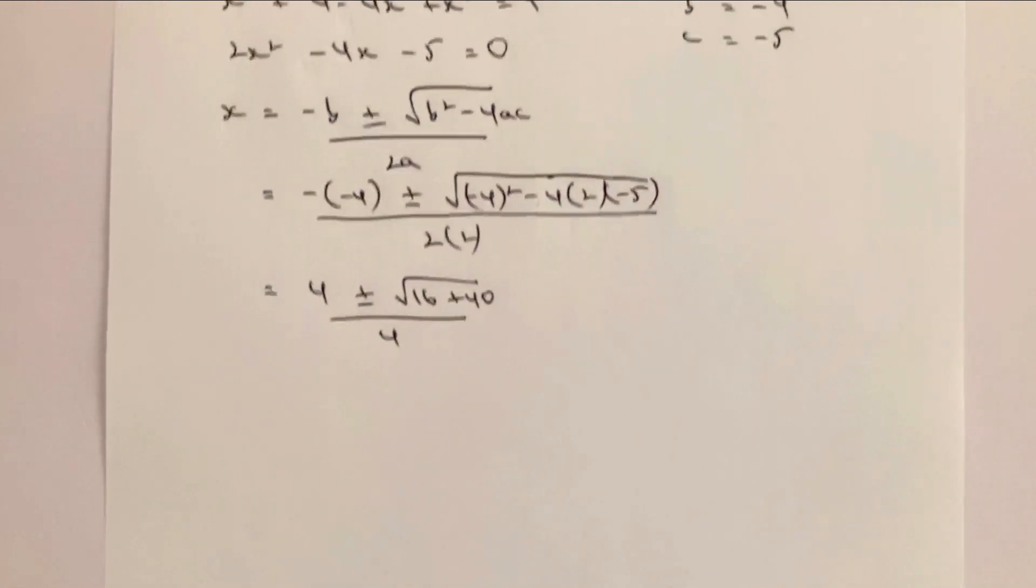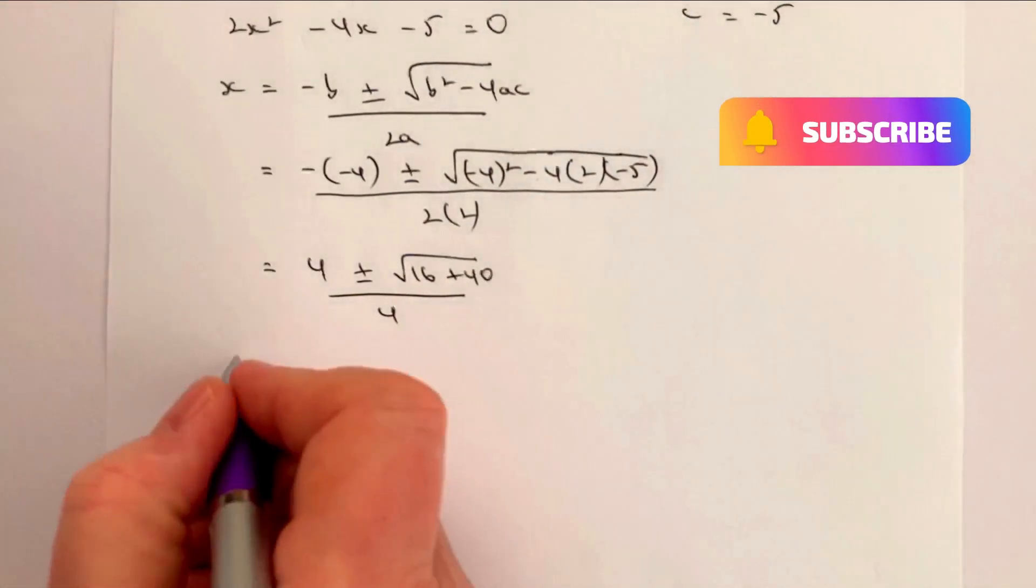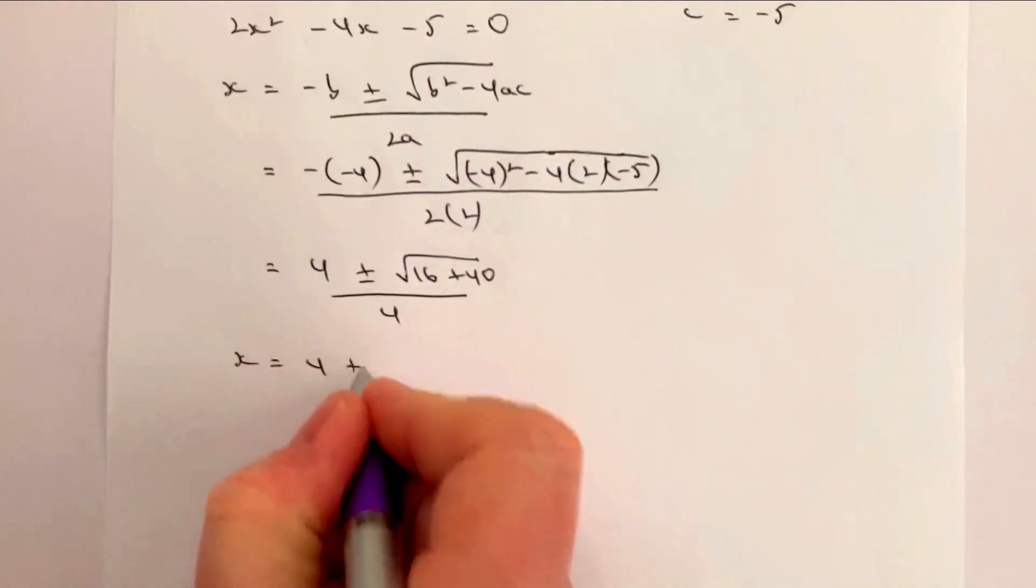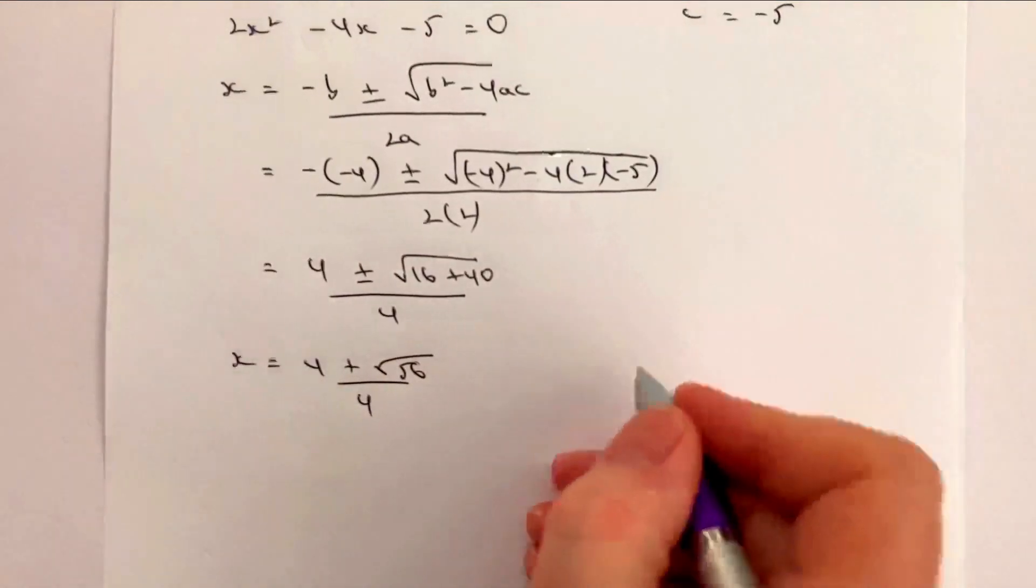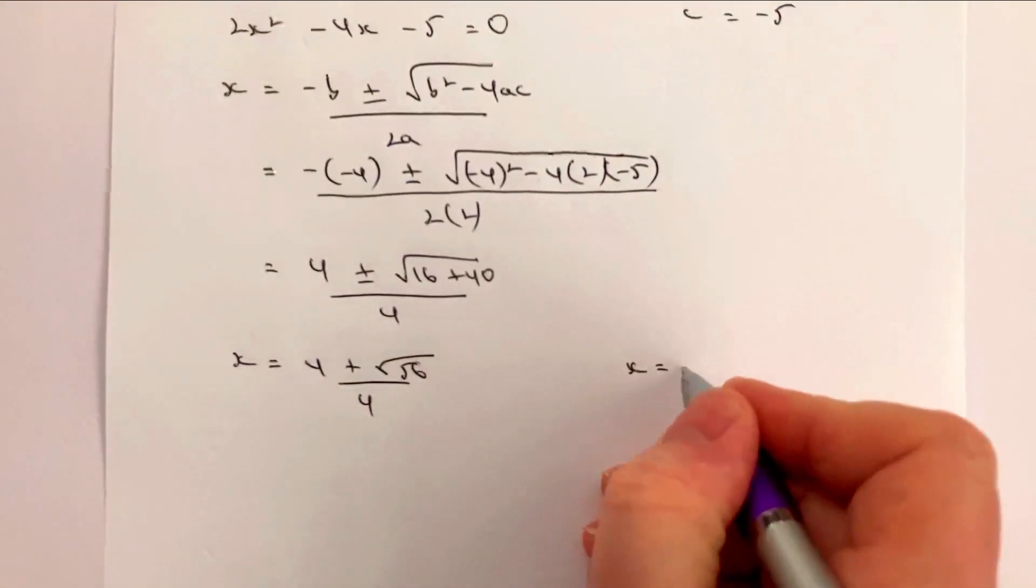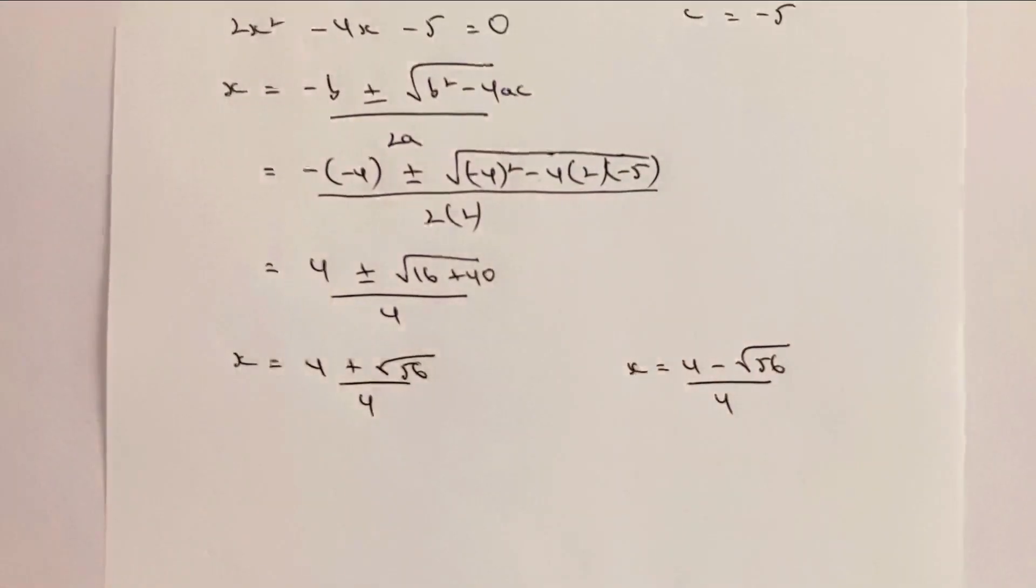So now we've got two values of x. Our first value of x is when x equals 4 plus the root of 56 all divided by 4, and the next value of x is when x equals 4 minus the root of 56 all divided by 4.